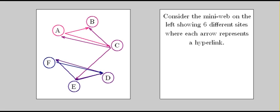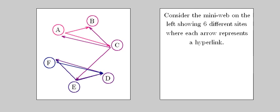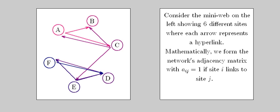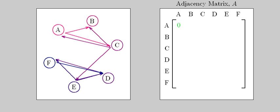So start with our mini web right here, six different sites, and we want to somehow quantify the structure of these websites. We will form what's called the adjacency matrix, where each row is going to contain a 1 if site A links to sites B and C. In this case, you'll see 1s for the 2nd and 3rd entries.